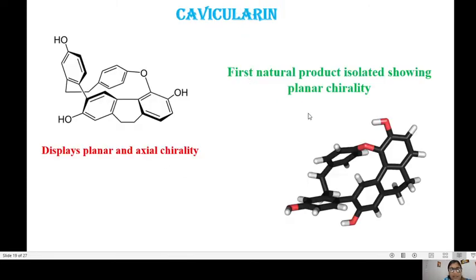This is a natural product called cavicularin. This is a single crystal x-ray of that compound which shows planar chirality. In fact, this molecule has both planar chirality and axial chirality as is evident from this figure.